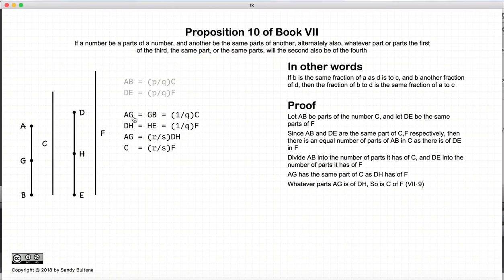Now whatever parts that AG is of DH, then C will be the same parts of F, and that's according to Proposition 9 of this book. So AG is equal to some fraction of DH, and C will be equal to the same fraction of F.